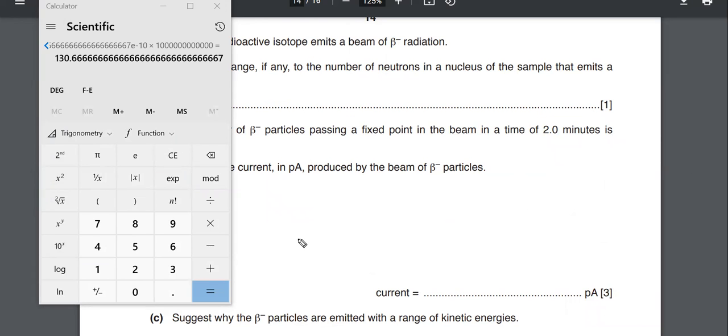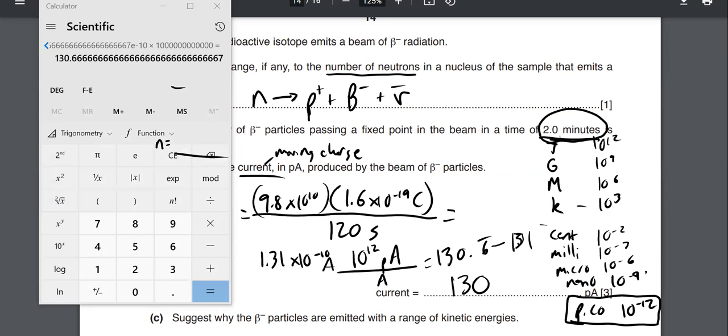The question then goes on to ask, suggest why the beta minus particles are emitted with a range of kinetic energy. If we consider this equation up here, this nuclear reaction, we don't just get a beta minus particle, but we also get, you know, this anti-neutrino and it's sort of like, you know, momentum has to be conserved. So if you have, for example, a stationary nucleus and it emits a beta minus particle, it could be that the rest of the nucleus moves in the other direction, you know, a little bit.